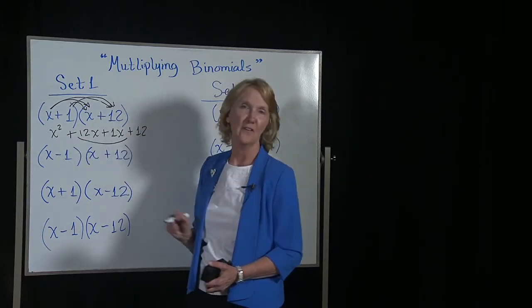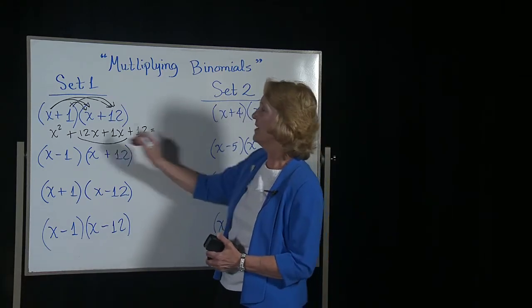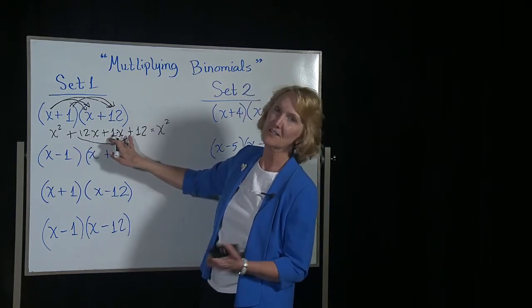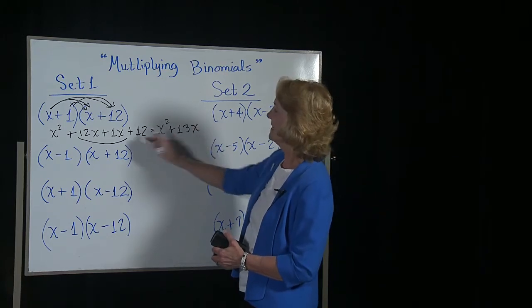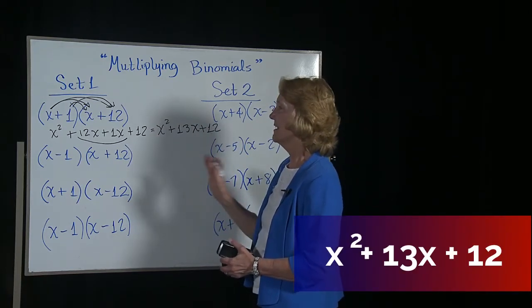Then you have, almost always, you're going to have like terms that you can combine. So we get x squared, you add 12x plus 1x, so you get the x squared plus 13x plus the 12. Okay, next one.